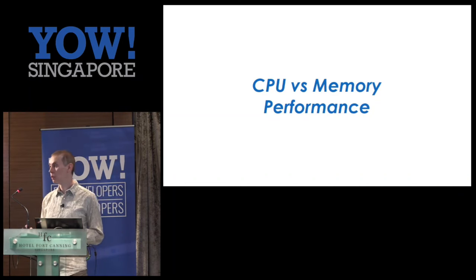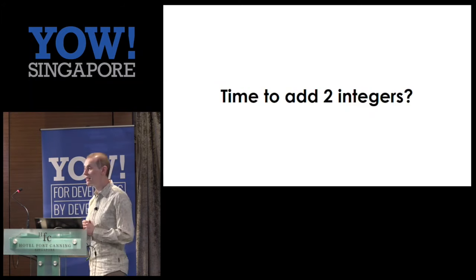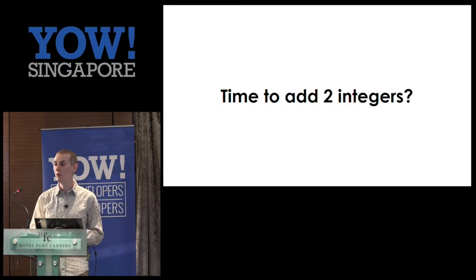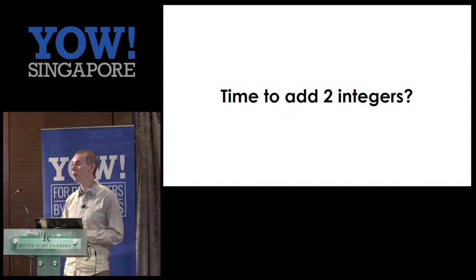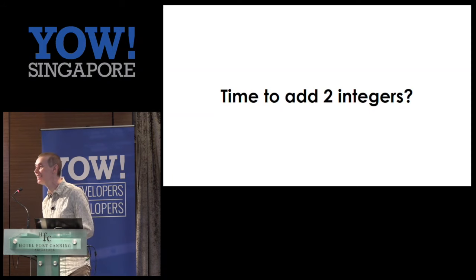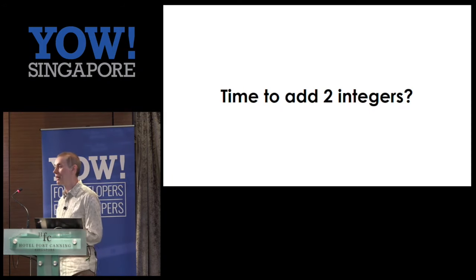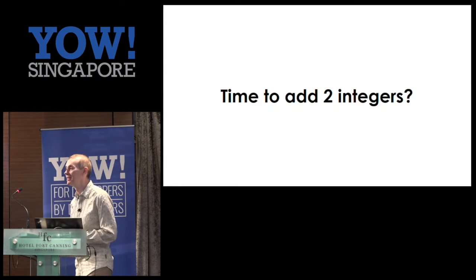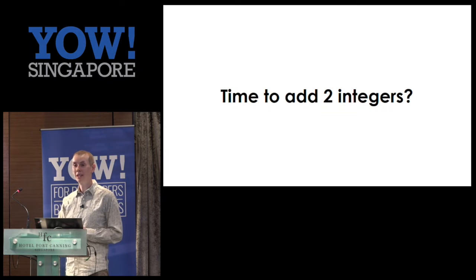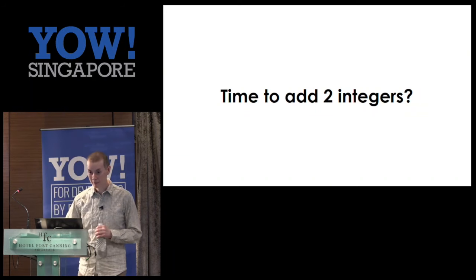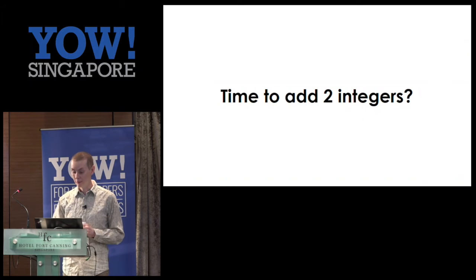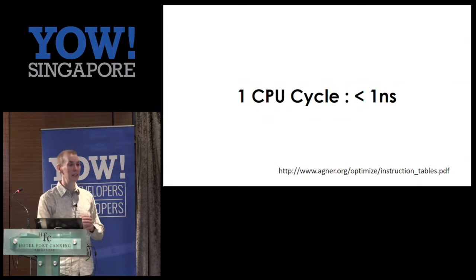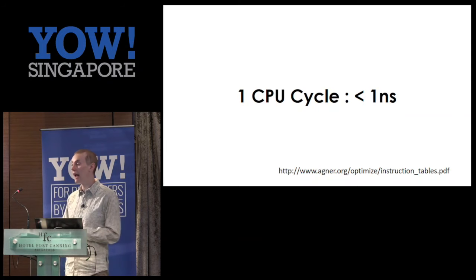Where do we spend our time and where are the costs? To see if you're all awake: how long does it take to add two integers on a modern CPU, with the integer values in registers? On X86 64-bit typical Intel or AMD architecture — one cycle is actually your answer. So if you're on a three gigahertz CPU, that's a third of a nanosecond. It's a tiny amount of time.